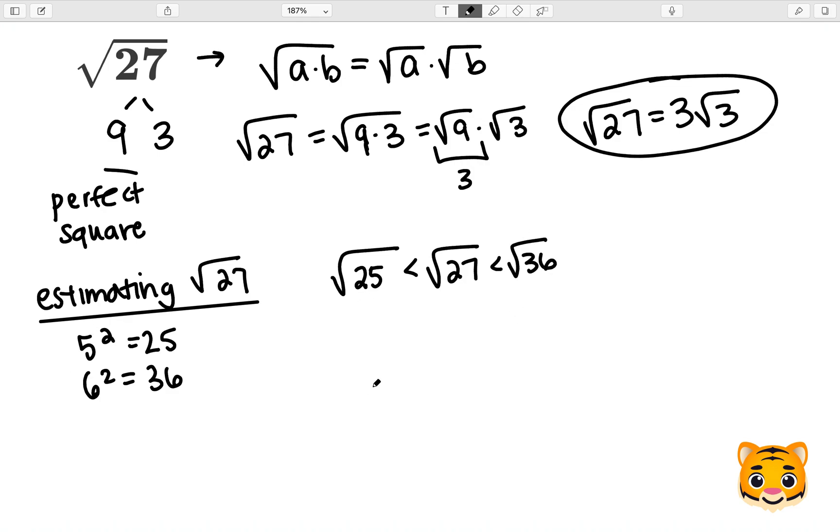Because 5 squared equals 25, the square root of 25 will be 5, and because 6 squared equals 36, the square root of 36 will be 6. Now we can see the square root of 27 lies between 5 and 6.